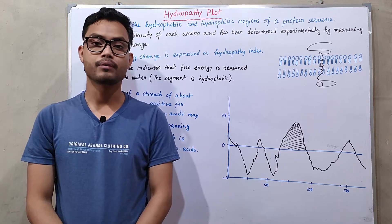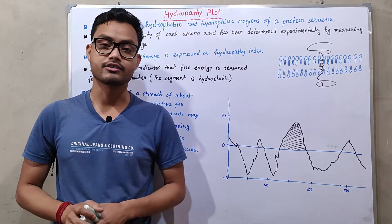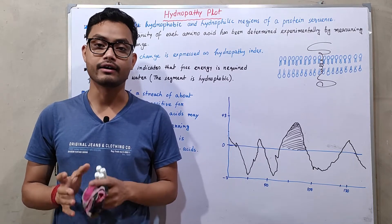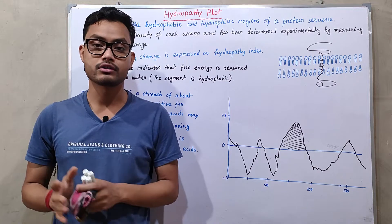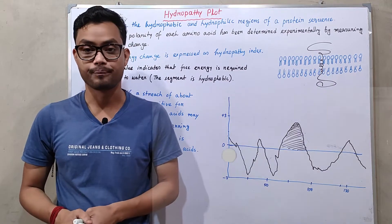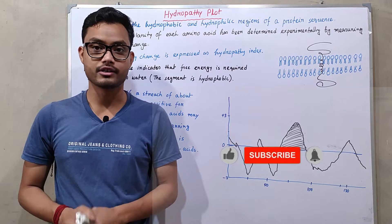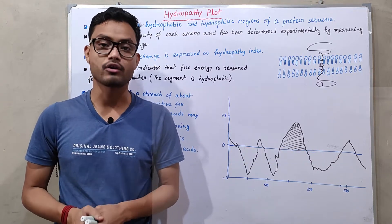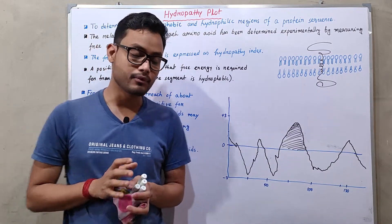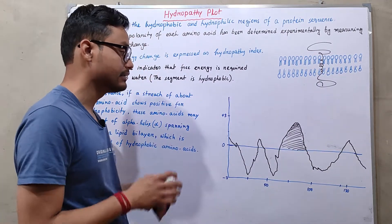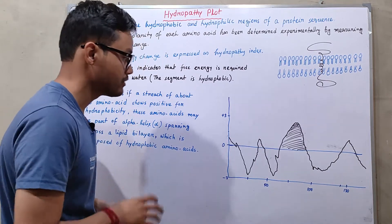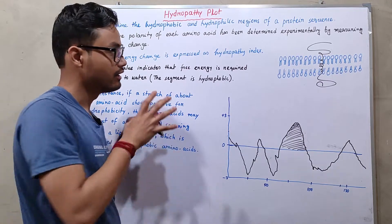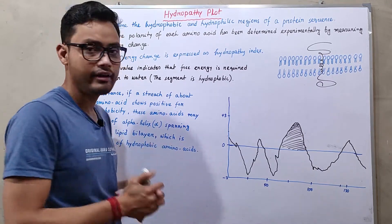A hydropathy plot or hydropathy index is a structure or diagram by observing which we can easily identify if a protein crosses the lipid bilayer — that is, whether it is transmembrane or not. Basically, it is a diagram that helps us identify if a membrane protein spans across the lipid bilayer.